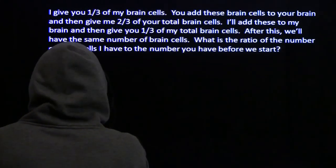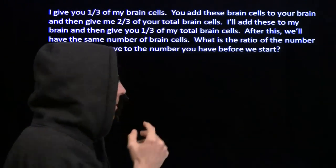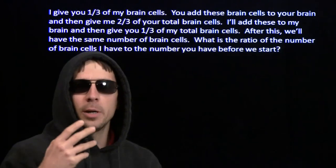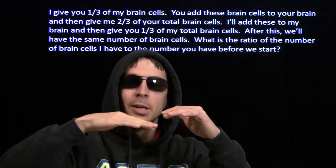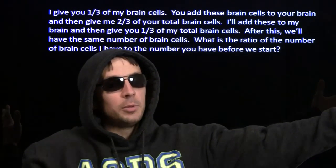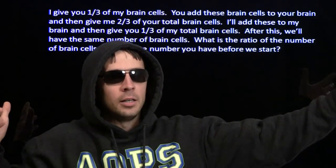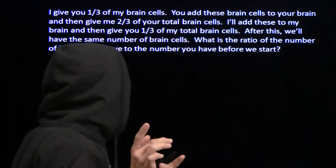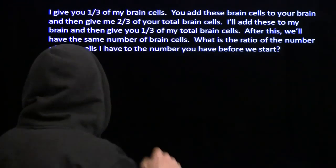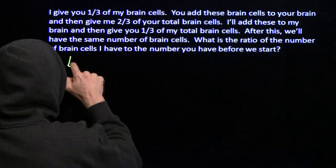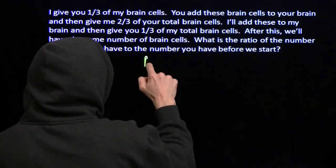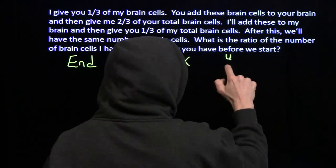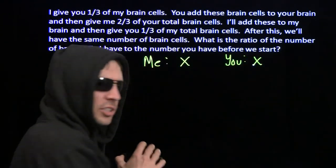A lot of words. Wait a second — this is just like that last problem, right? We know something about the end: we know that you and I are going to have the same number of brain cells at the end. We're trying to figure out what happened back at the beginning. So let's try working backwards again. At the end, I have X brain cells, and you have X brain cells. That's what happens at the end.